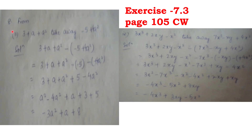Question number 8 says: from 3 plus A plus A square, take away minus 5 plus 4A square. Take away means you have to subtract. So see the solution: 3 plus A plus A square, minus in the bracket minus 5 plus 4A square. That gives us 3 plus A plus A square, then minus into minus 5, which is why I have written 1 minus outside.